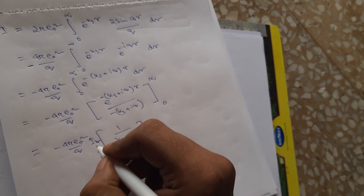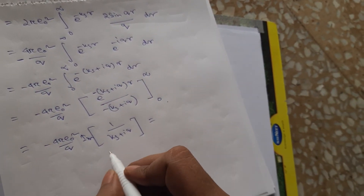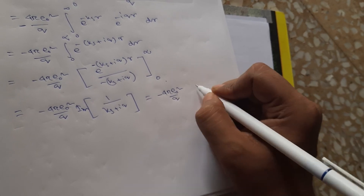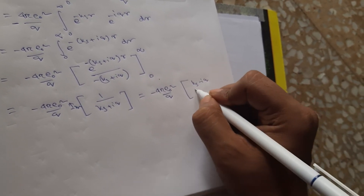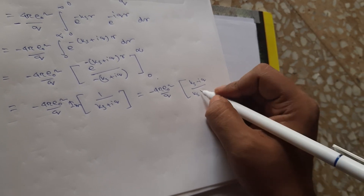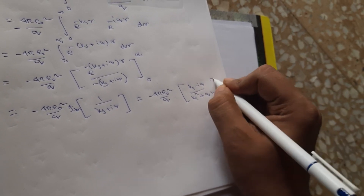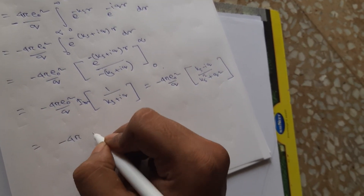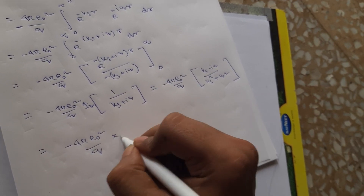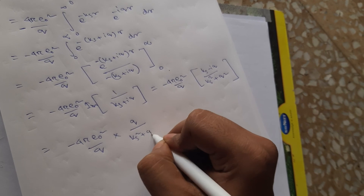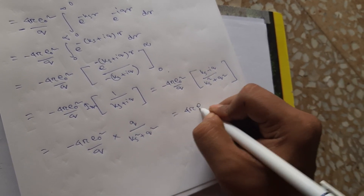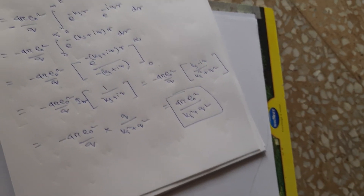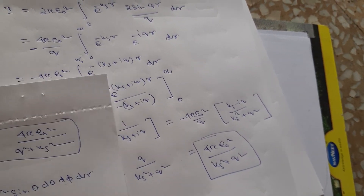We need to take the imaginary part of this expression since we represented sine as the imaginary part earlier. Multiplying numerator and denominator to extract the imaginary part: 4π e₀² over q, multiplied by minus i q, gives a denominator of k_s² plus q². The imaginary part then yields minus 4π e₀² over q times q over (k_s² + q²), which simplifies to 4π e₀² over (k_s² + q²).